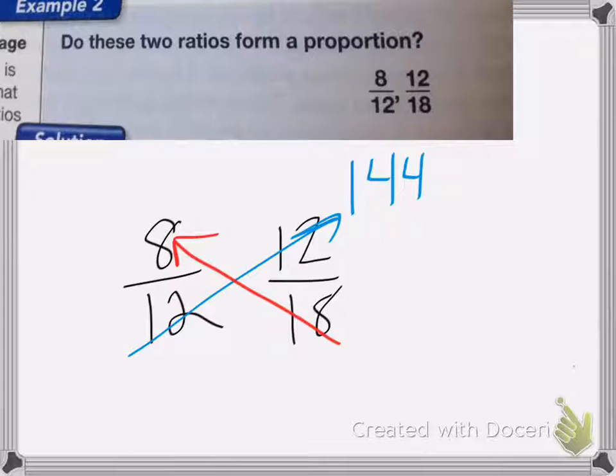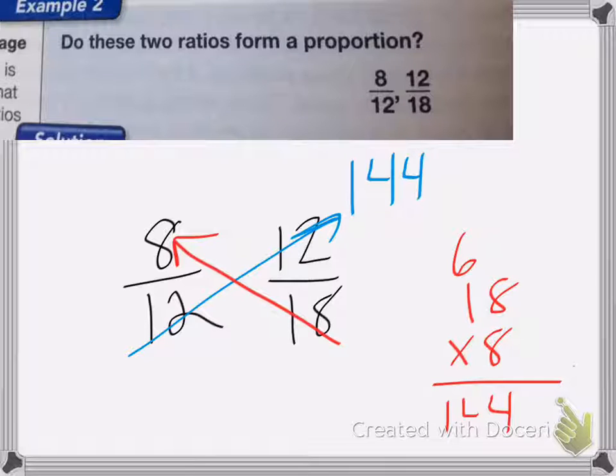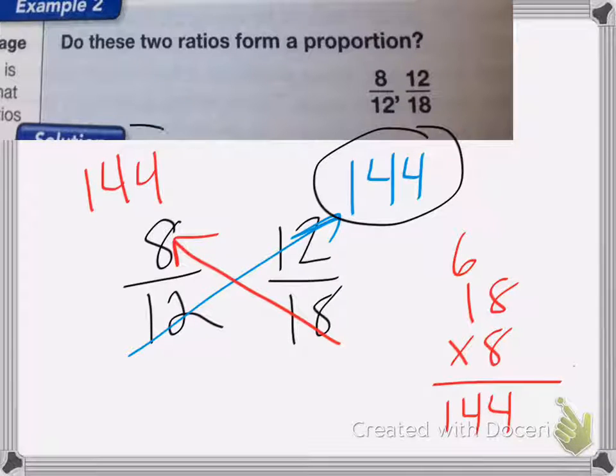And now I'm going to do 18 times 8, which I'm not sure of, so I'm going to multiply it over here. 8 times 8 is 64, carry my 6. 8 times 1 is 8, plus 6 is 14. Now I look, these two numbers are the same. So that means that 12 eighteenths is a proportion of 8 twelfths. So my answer is yes.